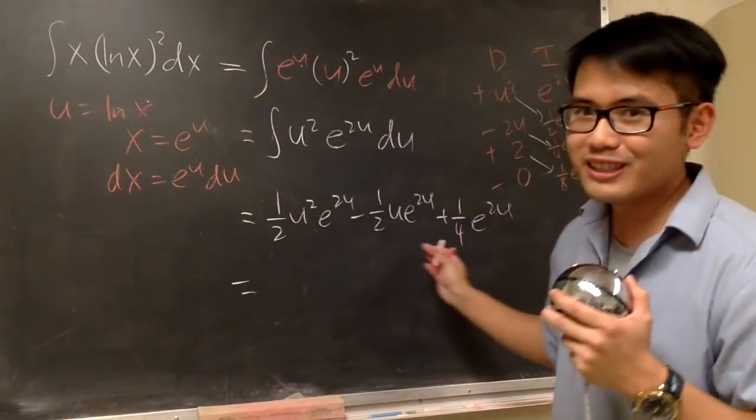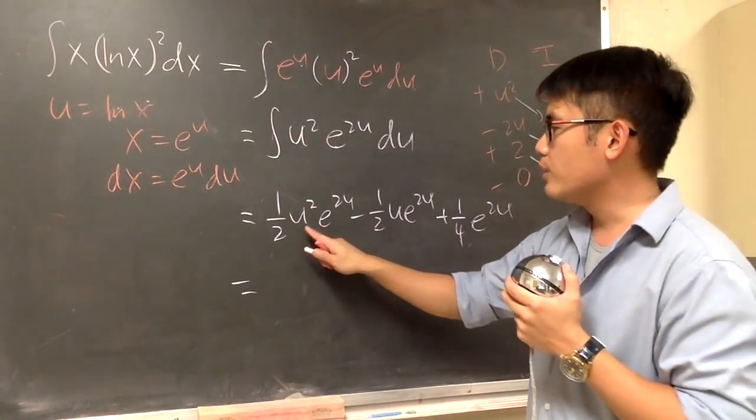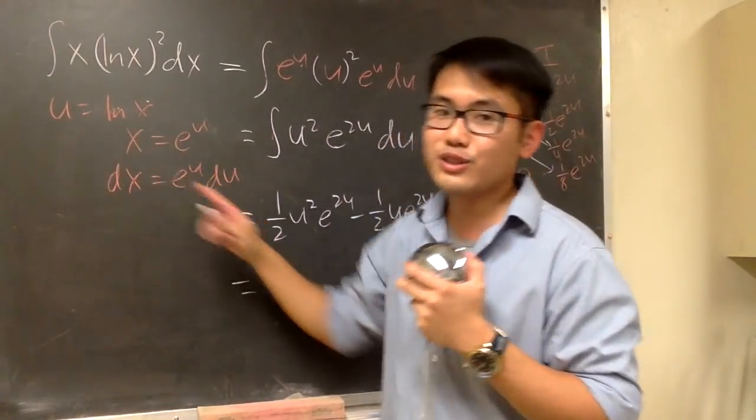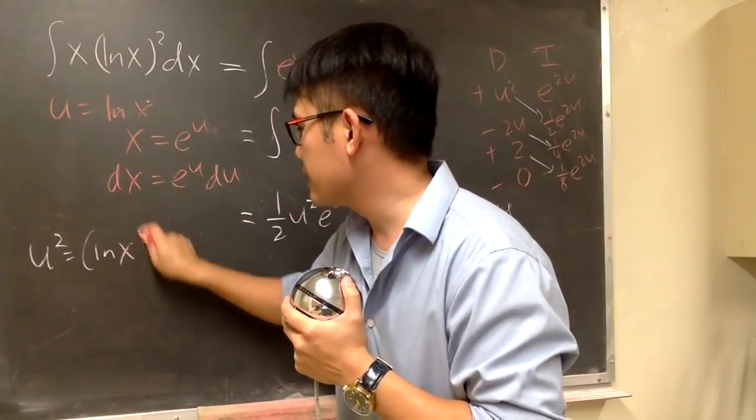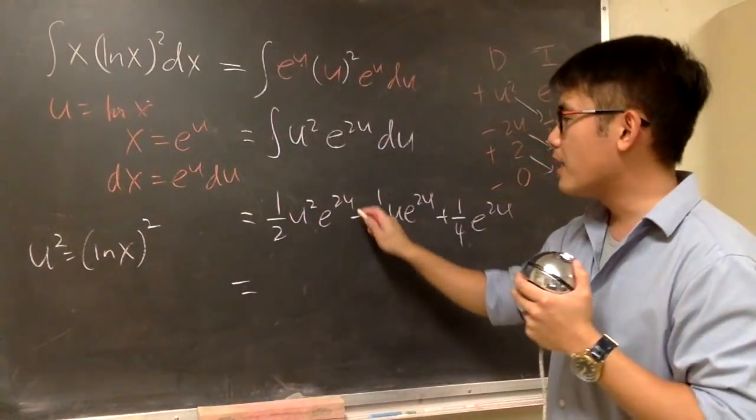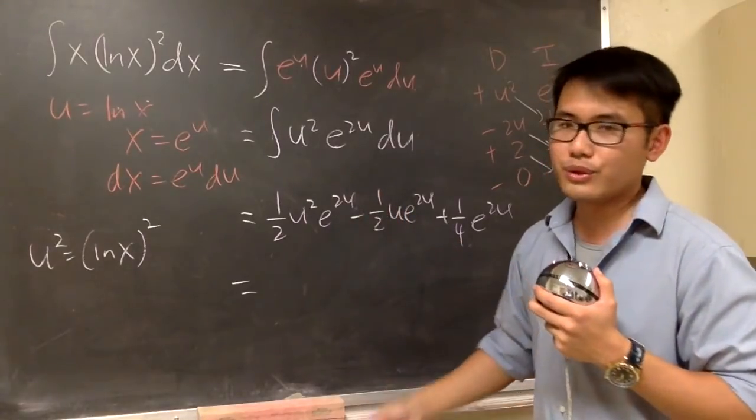And now we have to take this back to the x world. Well, we know u is ln x. So u squared is what? u squared is going to be parentheses ln x in the parentheses squared, right? How about e to the 2u? Do we know about that? Yes, we do, right?